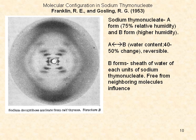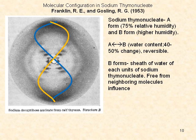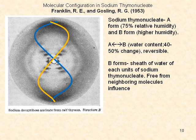Conversion of Structure A to Structure B is accompanied by a 30% increase in fibre length. Two lines are drawn to show the double helix form on Structure B. It is assumed that the structural units of Structure B are relatively free from the influence of neighbouring molecules due to protection by a sheath of water. If each unit in a long chain takes up its least energy configuration, then a helical structure is likely.